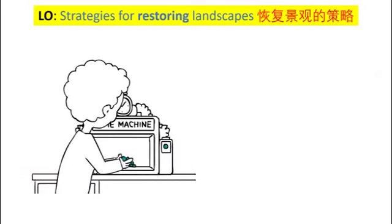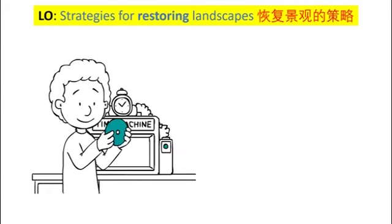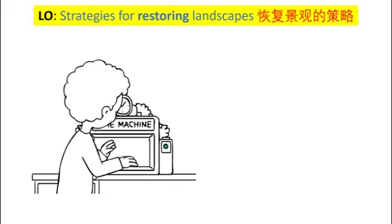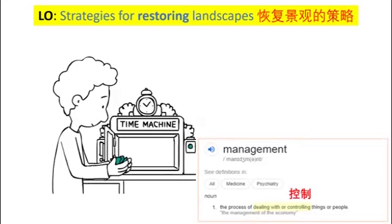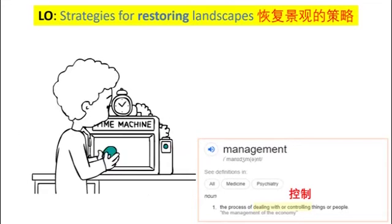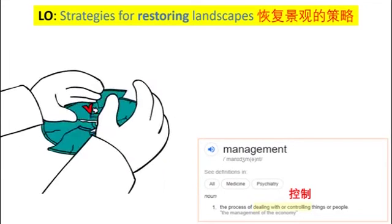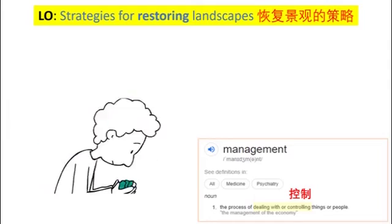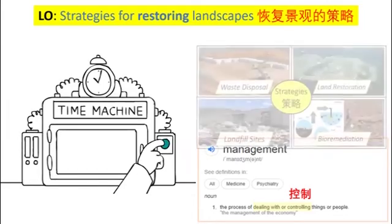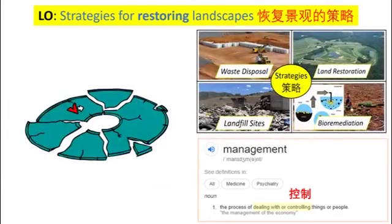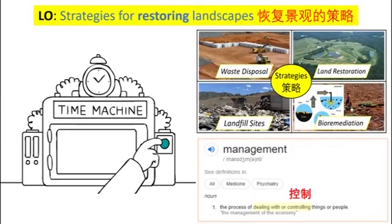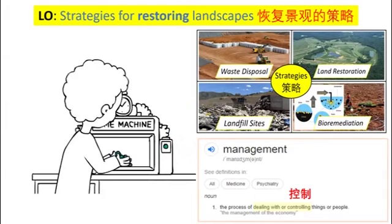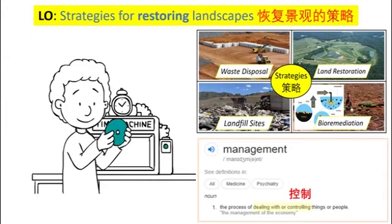Before we look at the different strategies, we first need to be clear what we mean by the word 'restoring.' To restore something means to take it back to its original condition or its original state. This course is called Environmental Management and within it we always want to see how we can best deal with the environment and control the negative impacts we have on different landscapes. There are four strategies we will look at: number one is waste disposal, number two is land restoration, number three is landfill sites, and number four is bioremediation.